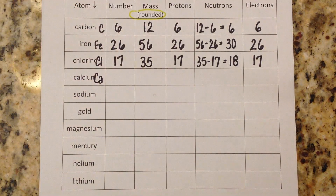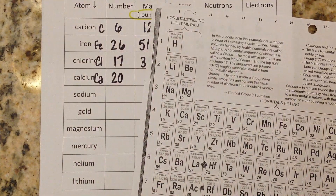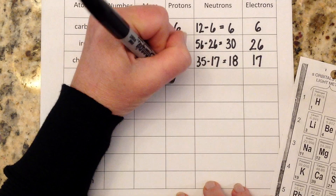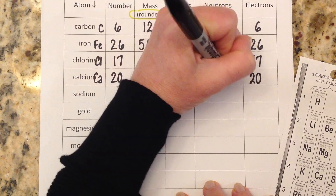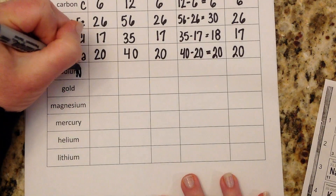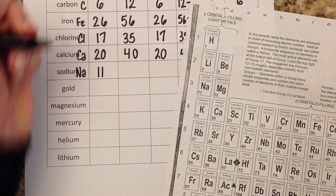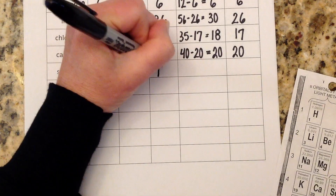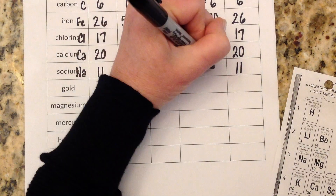Calcium is Ca — it's a metal located right here on the periodic table. Atomic number of 20, mass is 40.08, so we round that mass to 40. That means 20 protons, 20 electrons, and mass minus atomic number is 40 minus 20 equals 20 neutrons. Sodium is Na — also a metal on the left side of the periodic table. Atomic number of 11, mass of 22.99 which rounds to 23. So 11 protons, 11 electrons, and 23 minus 11 equals 12 neutrons.